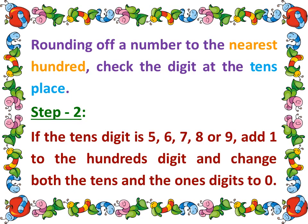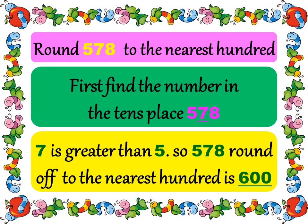Step 2: If the 10's digit is 5, 6, 7, 8, or 9 — that is, 5 or greater than 5 — add 1 to the 100's digit and change both the 10's and 1's digit to 0. For example, round 578 to the nearest 100. The digit in the 10's place of 578 is 7. Since 7 is greater than 5, add 1 to the 100's digit and change both the 10's and 1's digit to 0. Hence, 578 rounded off to the nearest 100 is 600.